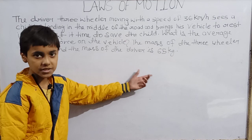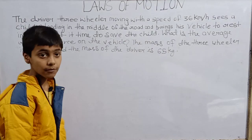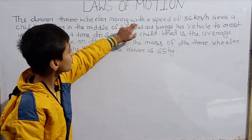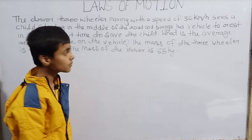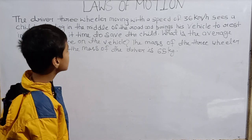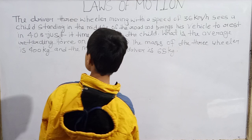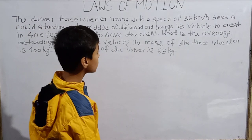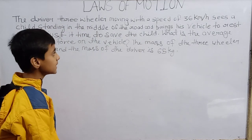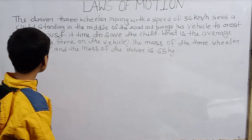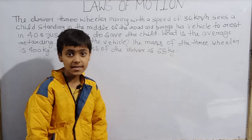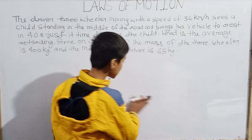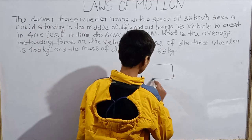This is question number 5.8 from Class 11th NCERT Physics, Laws of Motion chapter. The driver of a three-wheeler moving with a speed of 36 km per hour sees a child standing in the middle of the road and brings his vehicle to rest in 4.0 seconds, just in time to save the child. What is the average retarding force on the vehicle? The mass of the three-wheeler is 400 kg and the mass of the driver is 65 kg.